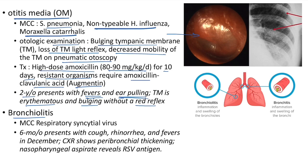Bronchiolitis: most common cause is respiratory syncytial virus (RSV). Bronchiolitis is inflammation and swelling of bronchioles; bronchitis is inflammation of bronchi. Chest X-ray shows peribronchial thickening. Clinical case: 6-month-old presents with cough, rhinorrhea, and fevers in December; chest X-ray shows peribronchial thickening; nasopharyngeal aspirate reveals RSV antigen.